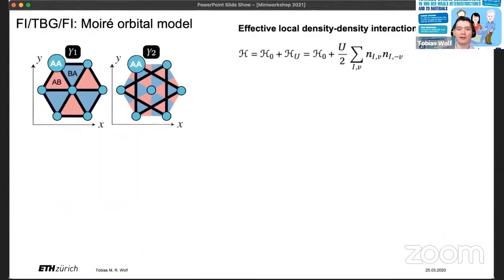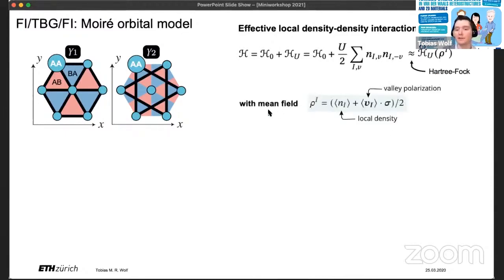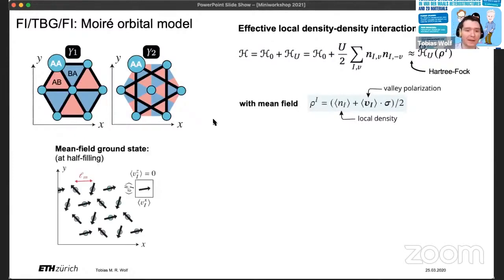And at that point, we can now start talking about interactions by including them on the level of the effective model. And we do so by taking into account interactions in the AA regions. So when K and K prime orbitals, electrons meet in the AA regions, they repel each other. We use a Hartree-Fock approximation and introduce a mean field for which we then solve self-consistently. It has two components, a local density and a valley polarization. This is where things get interesting or even more interesting.